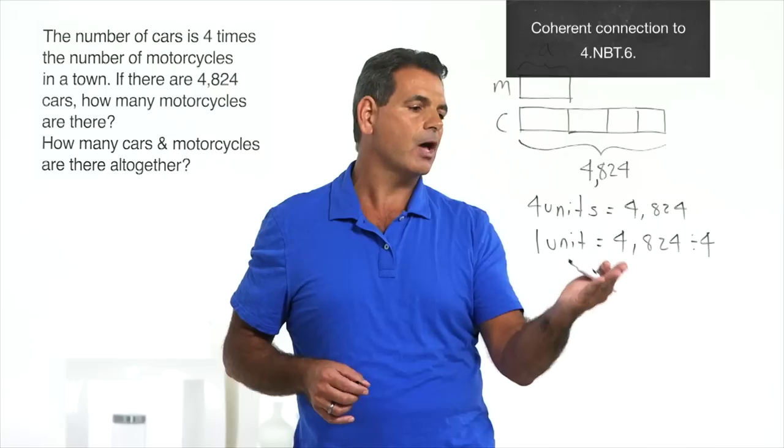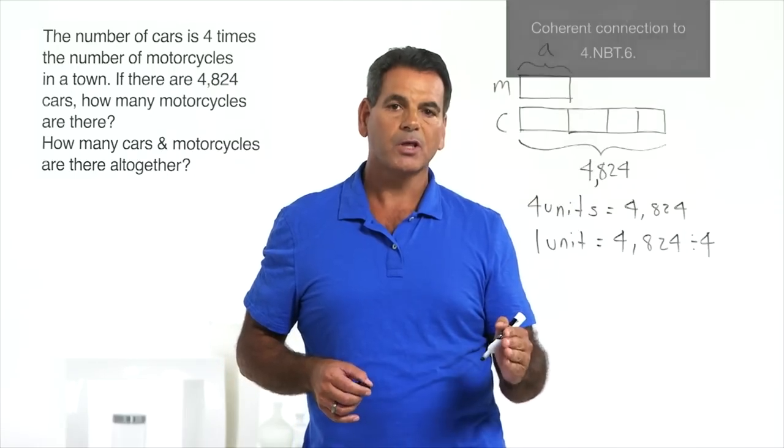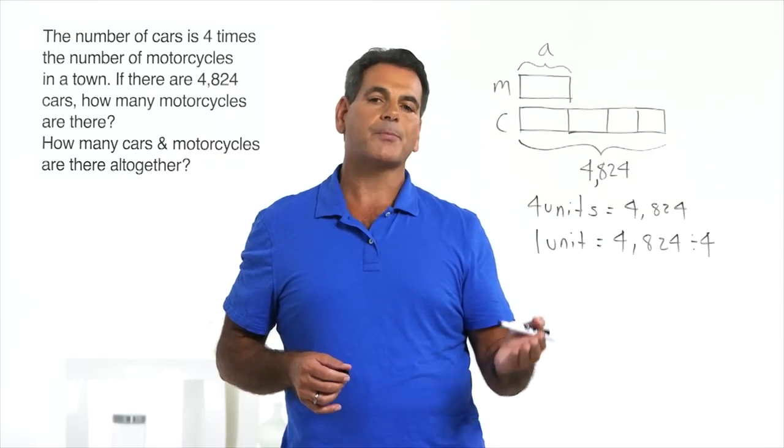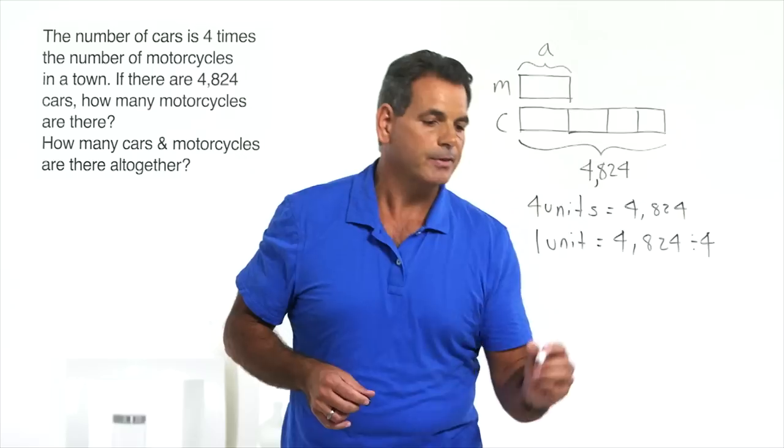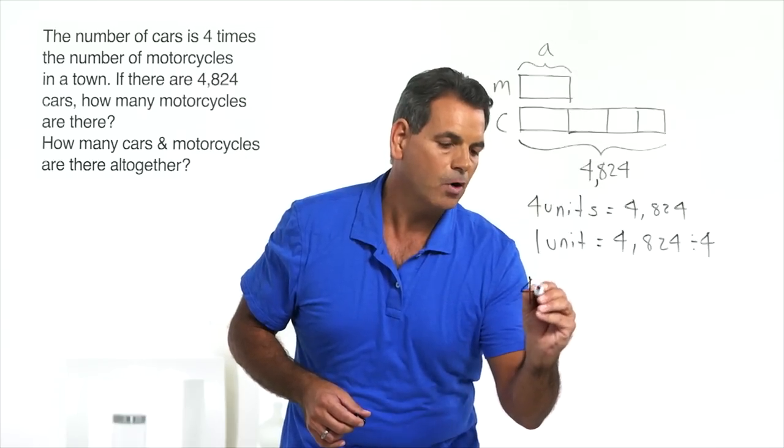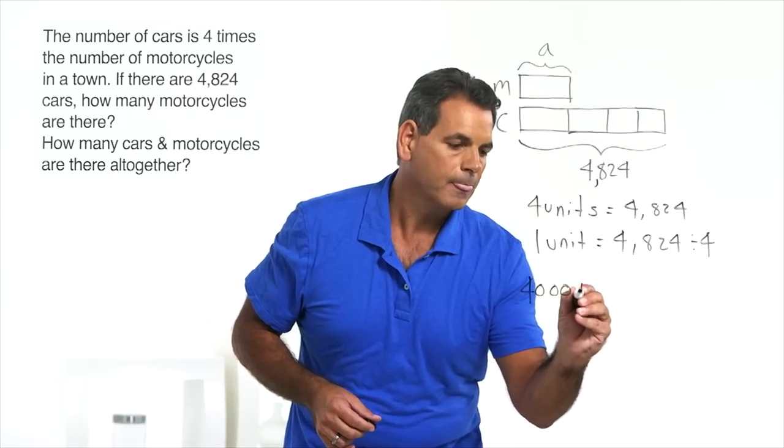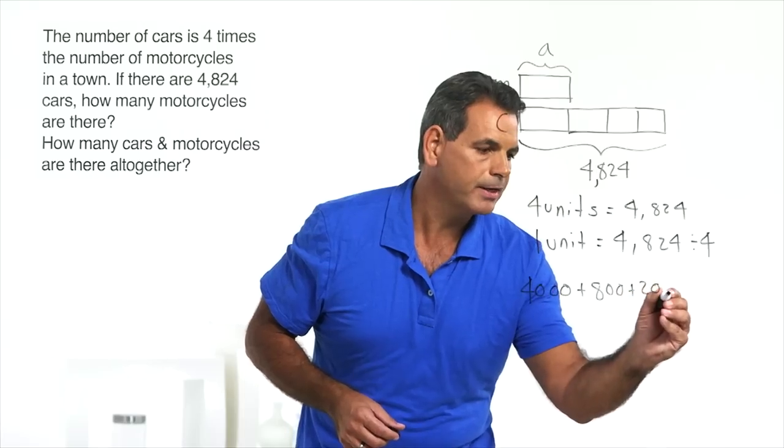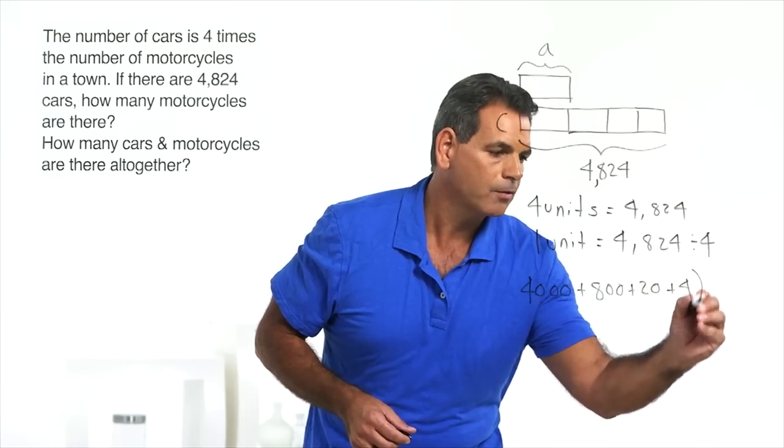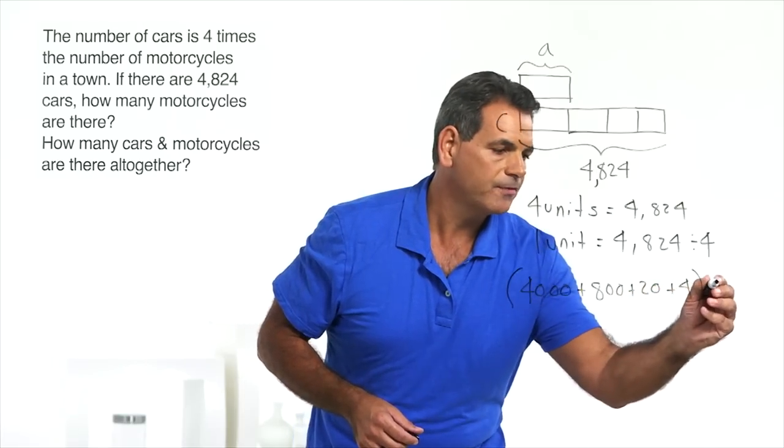And notice that these numbers are very accessible for using those properties of operations to solve it. Thinking distributive property, this can be solved. 4,000 plus 800 plus 20 plus 4, all divided by 4.